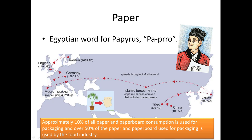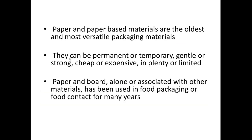Approximately 10% of all paper and paperboard consumption is used for packaging. There are many applications of paper — writing, decoration, and others — but out of the total production, 10% is used for packaging. Out of that 10%, 50% is used for the food industry.